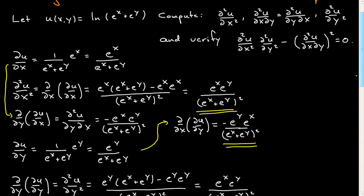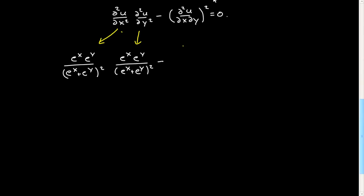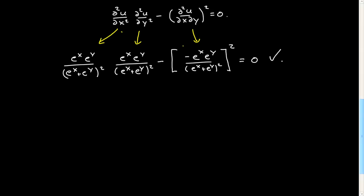Having computed these second derivatives, we want to verify the differential equation. I have all the derivatives written down. We take the second x derivative — which is e to the x e to the y over the denominator squared — and subtract the squared mixed partial. These two expressions are simply the same, so when I subtract them I get zero. The differential equation is verified.